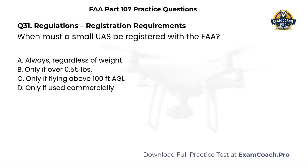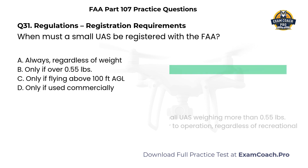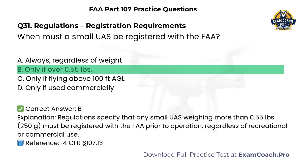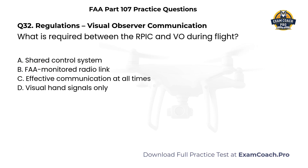Regulations — Registration Requirements. When must a small UAS be registered with the FAA? A. Always, regardless of weight. B. Only if over 0.55 pounds. C. Only if flying above 100 feet. D. Only if used commercially. Correct answer: B. Only if over 0.55 pounds. Regulations specify that any small UAS weighing more than 0.55 pounds, or 250 grams, must be registered with the FAA prior to operation, regardless of recreational or commercial use.